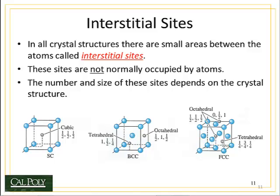Interstitial sites are openings in the crystal unit cell where an atom cannot occupy unless it's sufficiently small. For example, in the simple cubic unit cell, which is drawn here on the left, you notice there's going to be a hole in the dead center of the unit cell. This is called a cubic interstitial site, and it occurs at the one-half, one-half, one-half coordinate position from the origin.